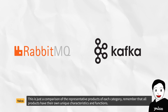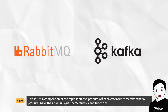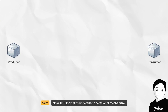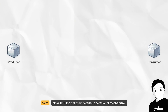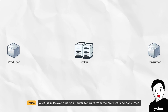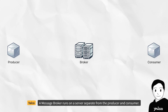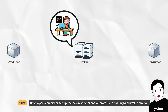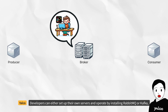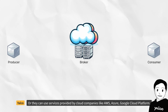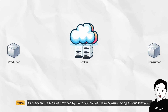This is just a comparison of the representative products of each category. Remember that all products have their own unique characteristics and functions. Now let's look at their detailed operational mechanism. A message broker runs on a server separate from the producer and consumer. Developers can either set up their own servers and operate by installing RabbitMQ or Kafka, or they can use services provided by cloud companies like AWS, Azure, or Google Cloud Platform.